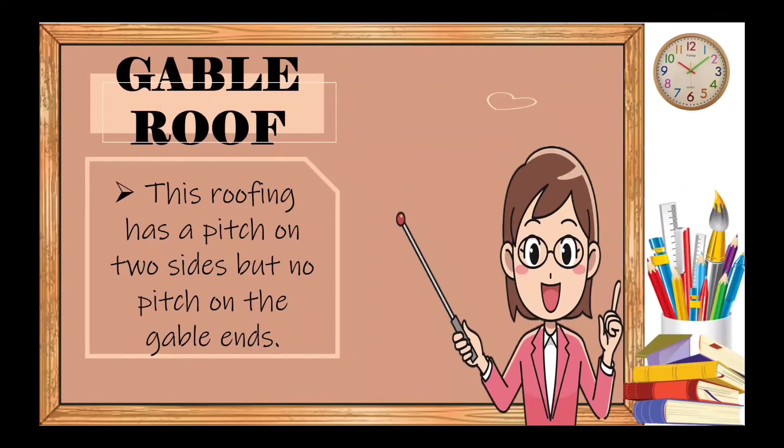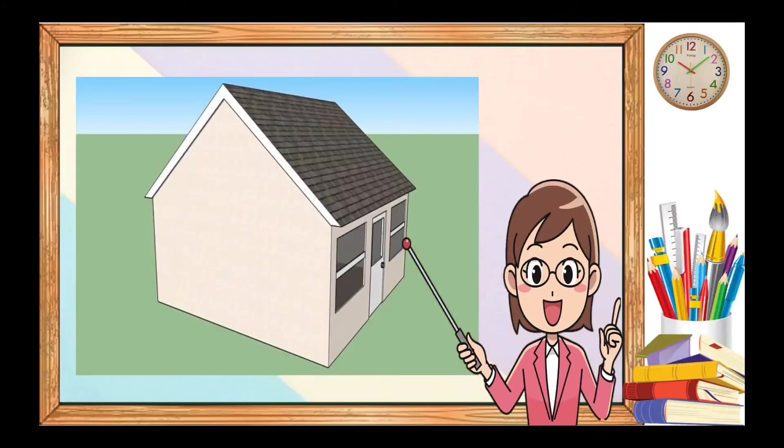Let's have the first type, gable roof. This roofing has a pitch on two sides but no pitch on the gable ends. The term gable refers to the triangle spot that is formed when the two pitch areas of the roof meet. This roof is very popular type because it is easy to build, it sheds water well, facilitates ventilation, and can be applied to most house designs.